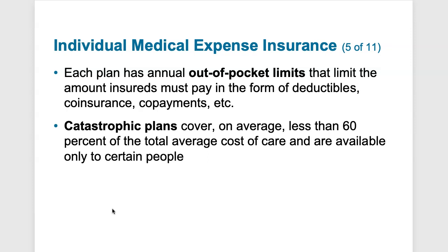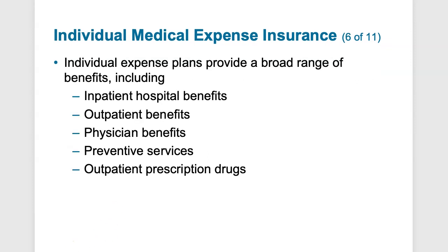There are numerous potential healthcare plan benefits, so let's focus on a few important ones. Inpatient hospital benefits cover hospital stays including room and board charges, intensive care treatments, equipment, nursing care, and other services — and these can be very expensive. Outpatient benefits apply when you receive care at a separate facility after leaving the hospital, continuing care such as surgery follow-up or treatment that the hospital can't fully provide.